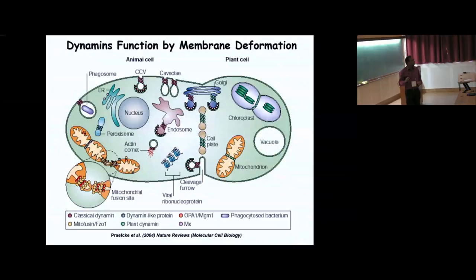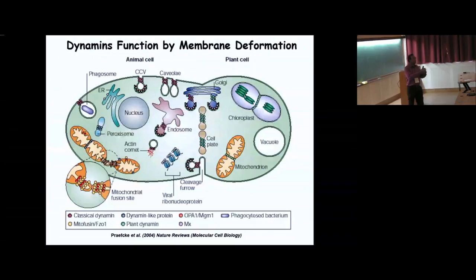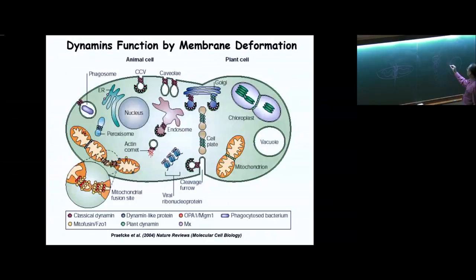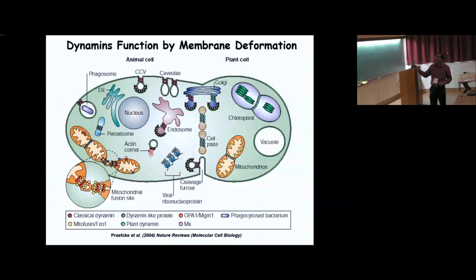There are also dynamins which neither make membrane fission nor fusion — rather they make tubulation. For example, if you take Golgi vesicles which are spherical, the dynamin associates with them and, taking a helical spiral shape, converts the spherical vesicle into a dumbbell shape. So it tubulates — it doesn't break or fuse the membrane.